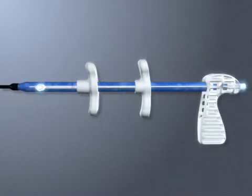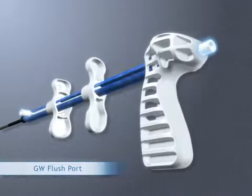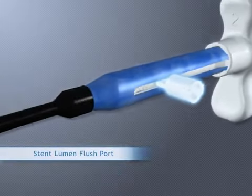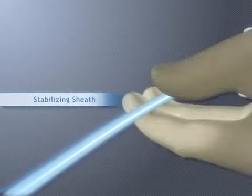The handle has two saline flush ports. The rear port is used to flush the guide wire lumen. The side port is used to flush the stent. A stabilizing sheath extends from the handle.